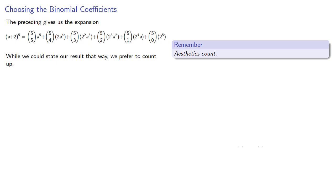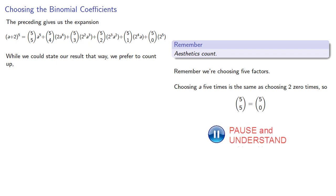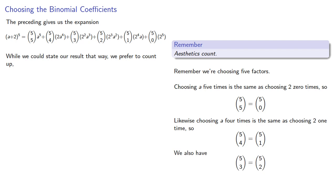So let's think about this. Remember, we're choosing 5 factors. Choosing a five times is the same as choosing 2 zero times, so 5 choose 5 is the same as 5 choose 0. Likewise, choosing a four times is the same as choosing 2 one time, so 5 choose 4 is the same as 5 choose 1. And we also have 5 choose 3 being the same as 5 choose 2.